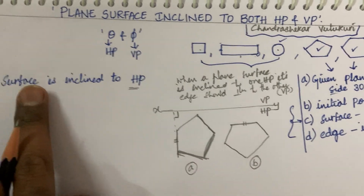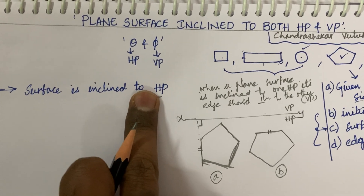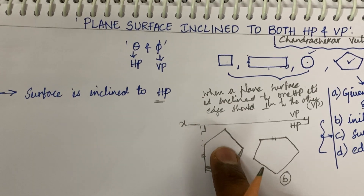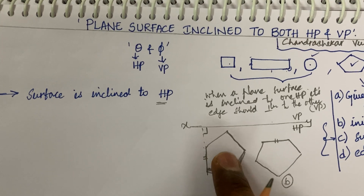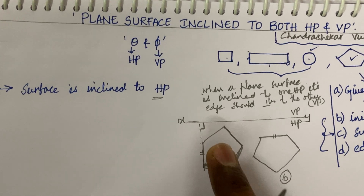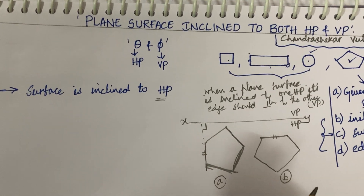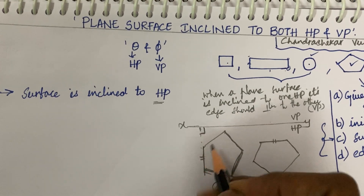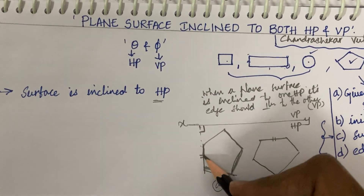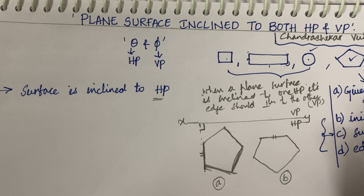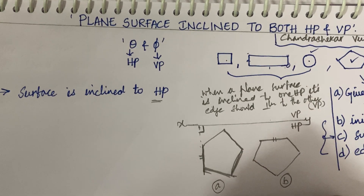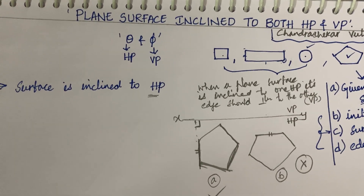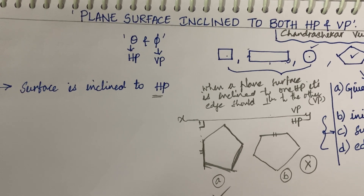As the surface is inclined to HP, the plane's surface should be parallel to HP, and its straight edge should be perpendicular to the other plane — VP. Hence condition A is correct and condition B is incorrect. Do not confuse among yourselves.